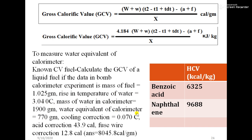Water equivalent is given, that is 770 gram, that is ω. Cooling correction is given 0.07°C, that is dt or t×dt. Acid correction is given 43.9 calorie, fuse wire correction is given 12.8 calorie. This is a value, this is f value.